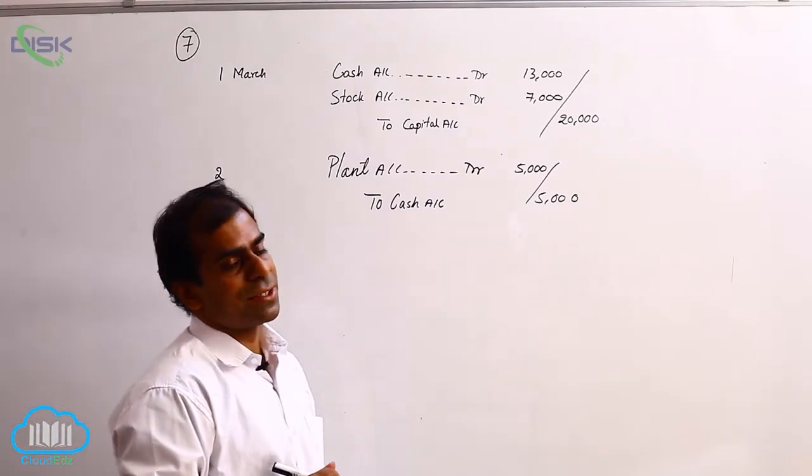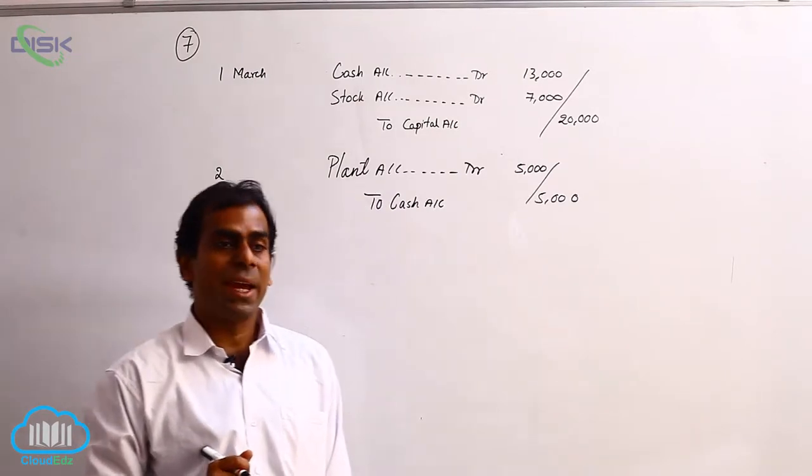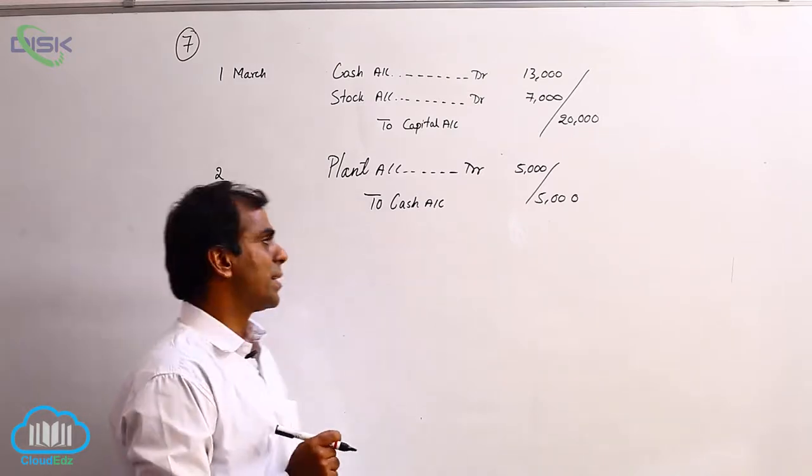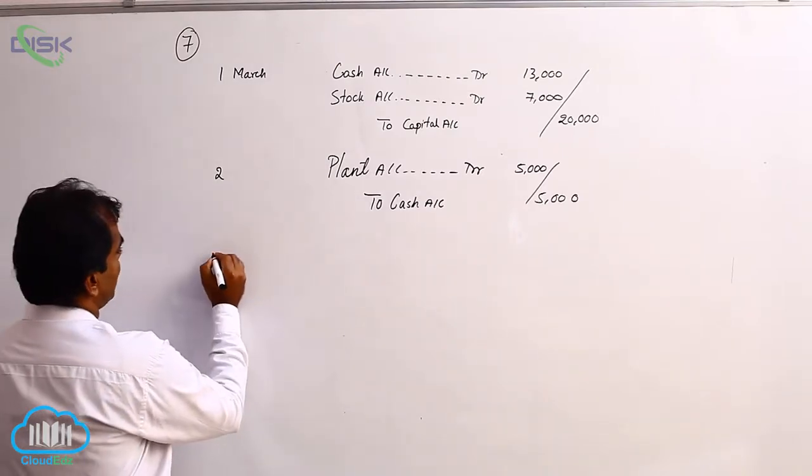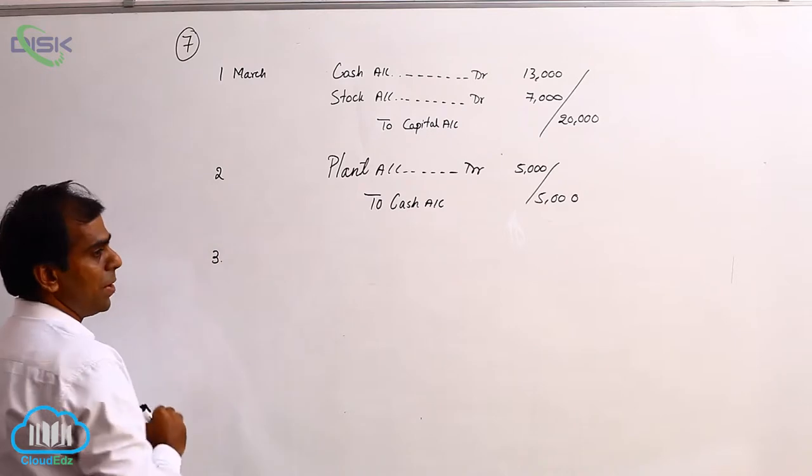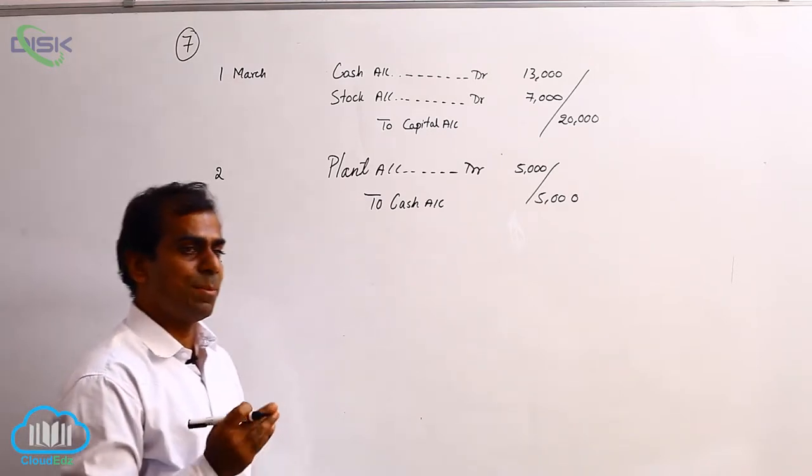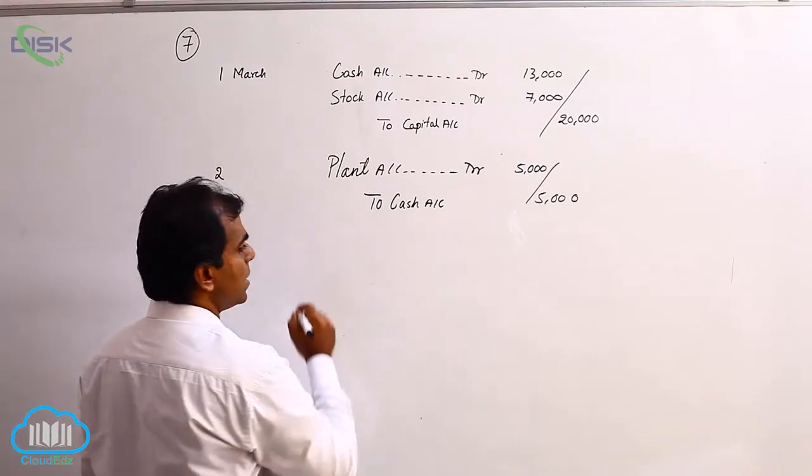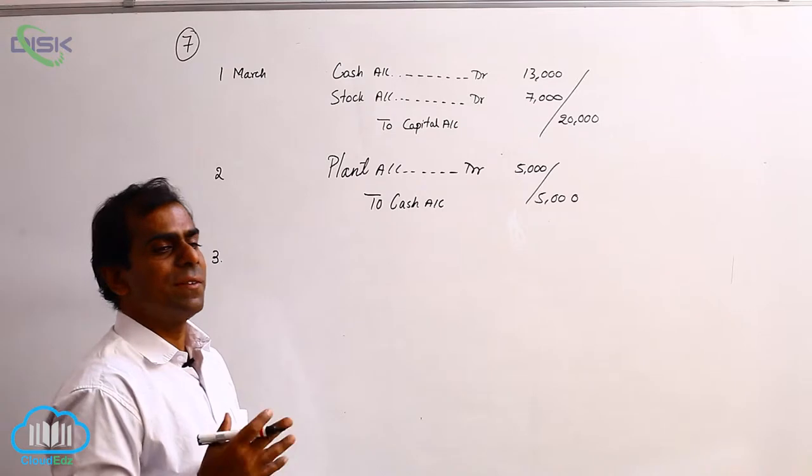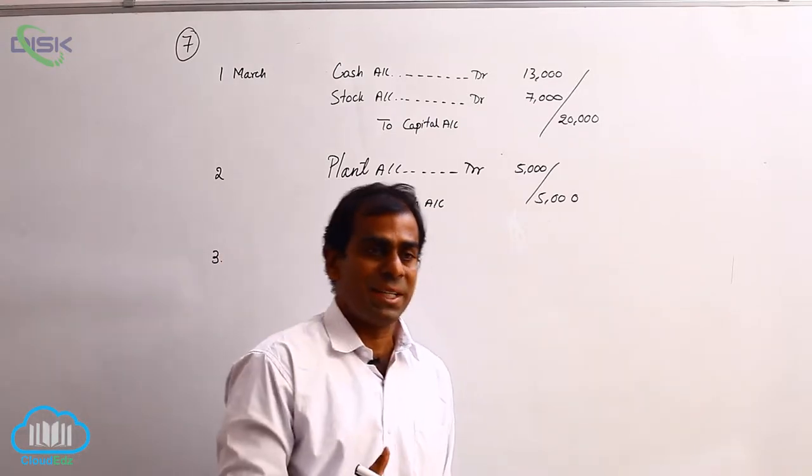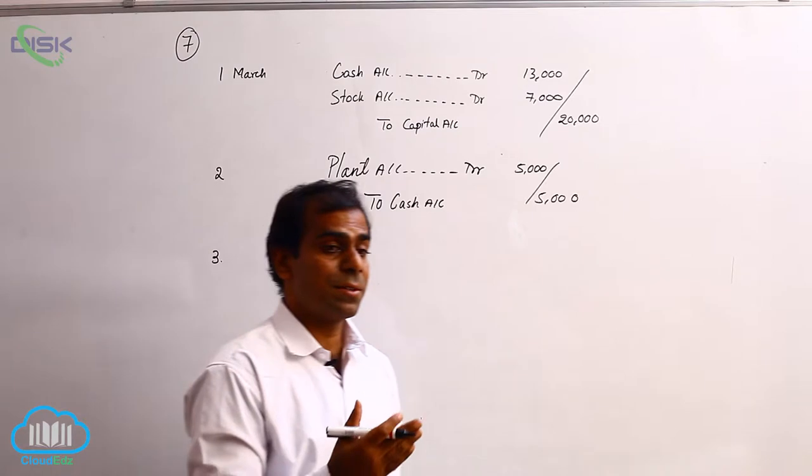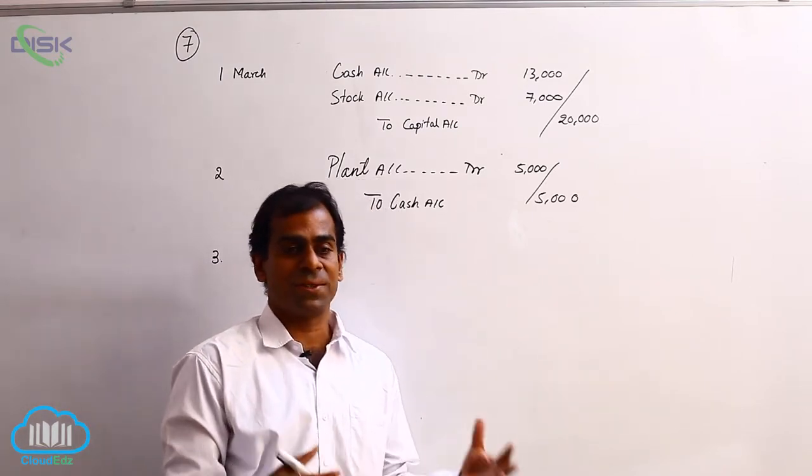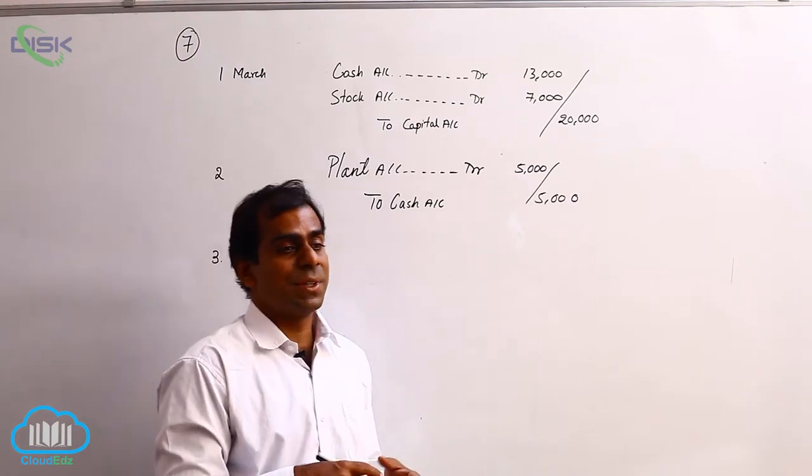Now the next transaction is on 3rd. It is paid for postage 500. So again it is a cash transaction, cash is going out. And what we are getting is postage. But postage is treated as nominal account because whatever we buy as postal materials, they are not going to stay with us for a long time. We do not preserve the postal materials or stationery for more than one year.